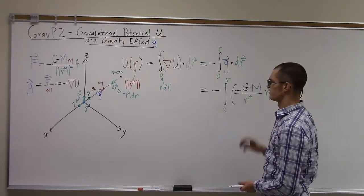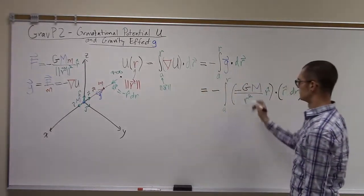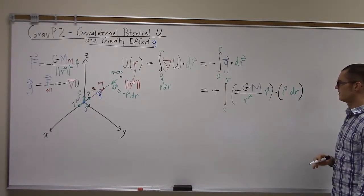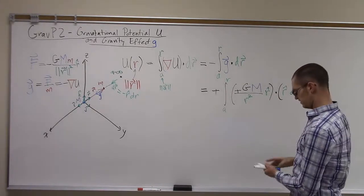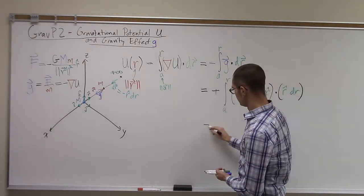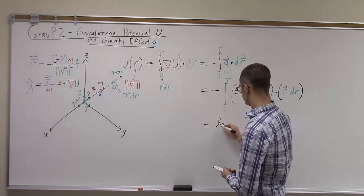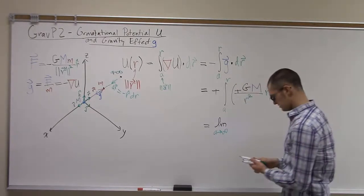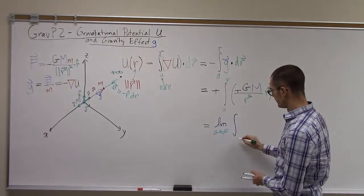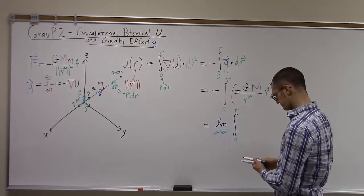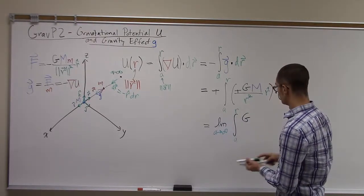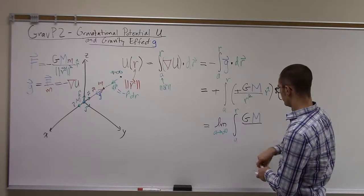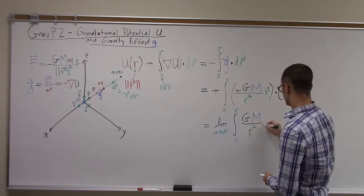So now we have a negative sign over here to account for this negative sign right here. So these negative signs cancel out. So r hat dot r hat is just equal to 1, so scalar value of 1. And we'll take the limit of this integral. So we'll take the limit as a approaches infinity of the integral from a to r of GM over r squared dr.